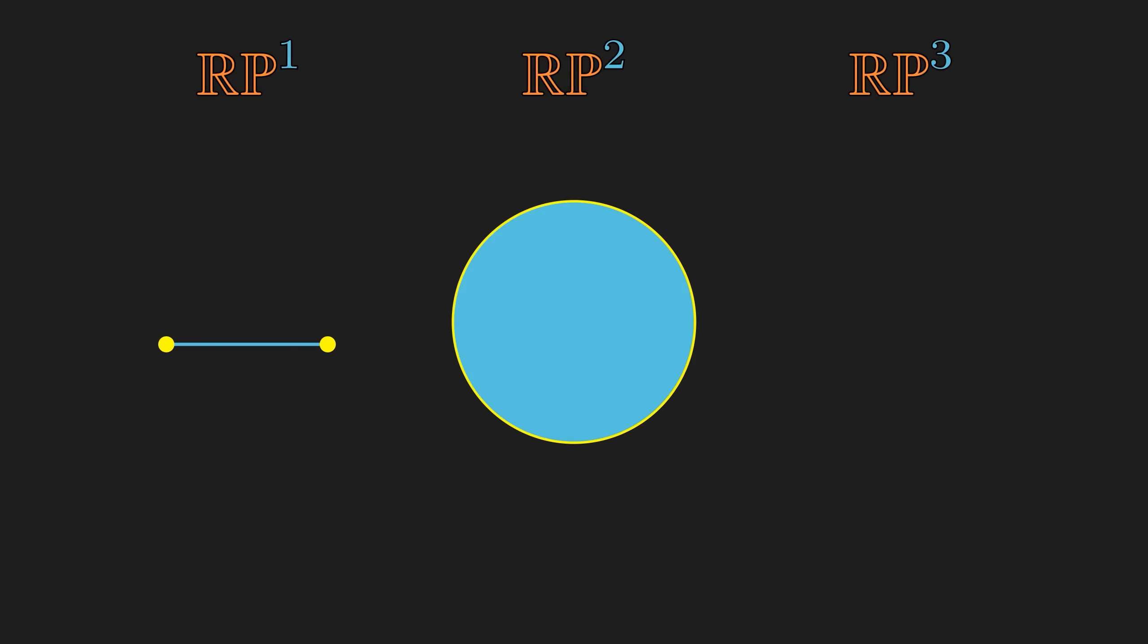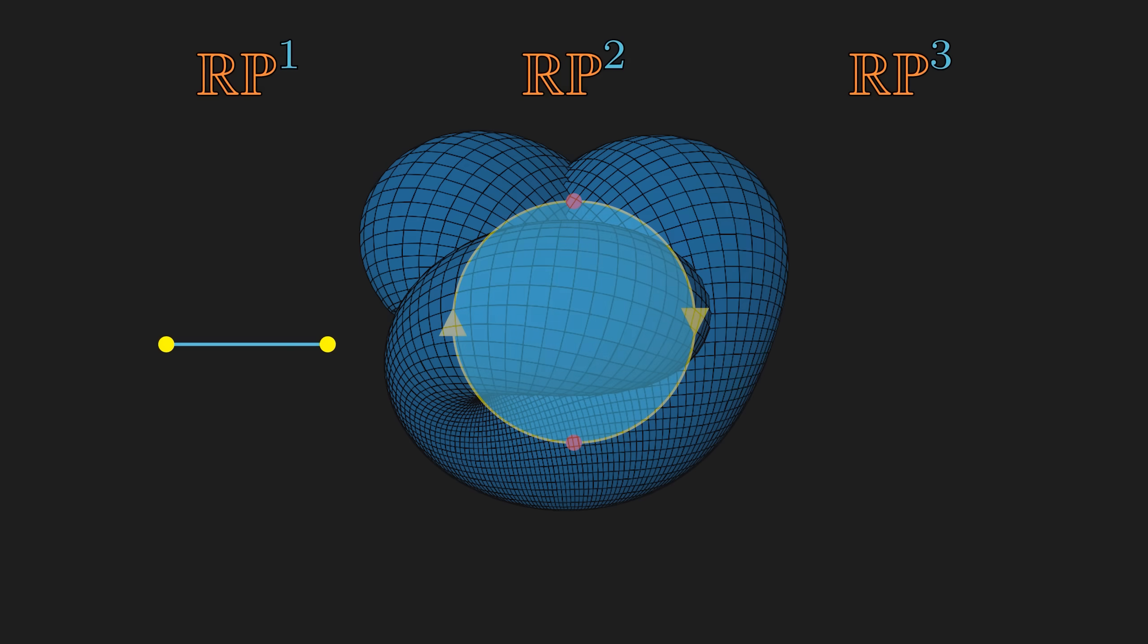For RP², we start with the two-dimensional ball, which is just a disk. Then imagine the boundary as a portal. So if you exit from one end, you re-enter from the opposite side. If I draw arrows to show how the boundaries are identified, you may notice the surface is twisted, meaning it's not orientable. It takes quite a bit of imagination to picture this as an immersion in 3D space.